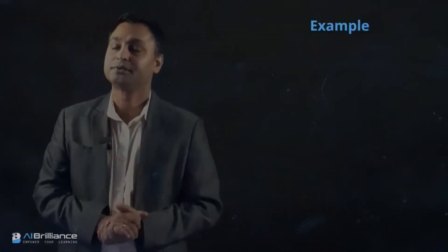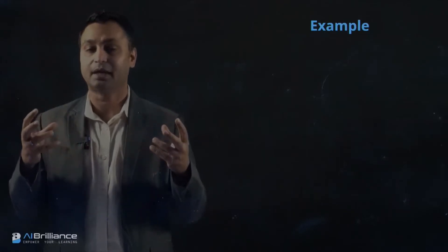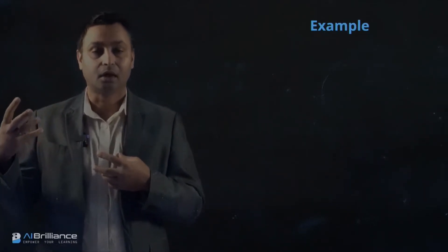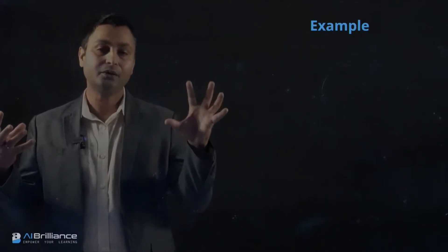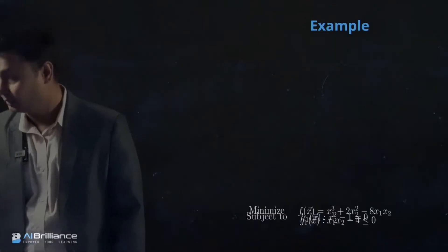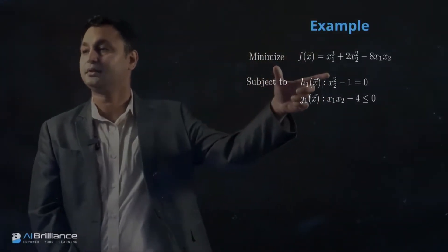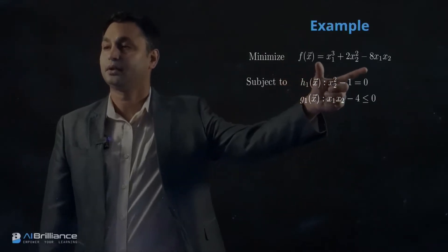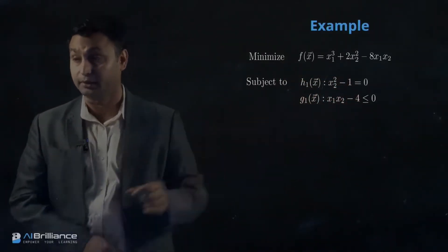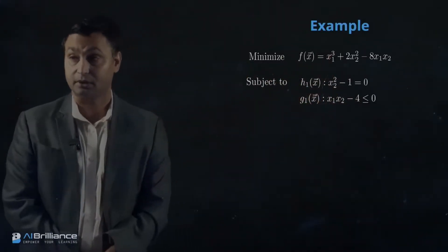Let's take an example problem and see how a conversion happens — how do I take a problem A, which is a nonlinear constrained optimization problem, and convert it into a sequential quadratic program. So let's take this formulation: the objective function has nonlinear terms, it has an equality constraint and an inequality constraint, and both the constraints and the objective function are nonlinear.